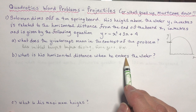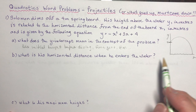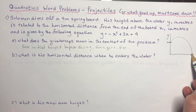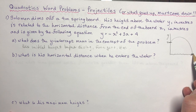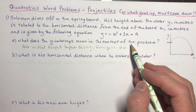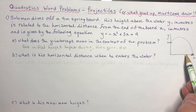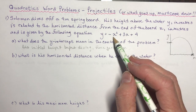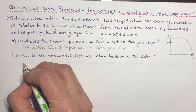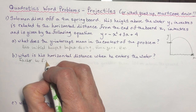What is his horizontal distance when he enters the water? When he enters the water - that means here on the diagram. Entering the water means finding the zeros, the x-intercepts. That's a zero of the function. I would try to factor this - that's going to give me zeros. The other way you could find zeros is to use the quadratic formula, but this one's going to be factorable.